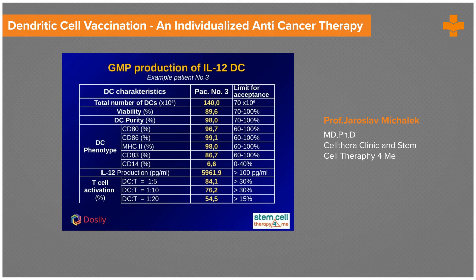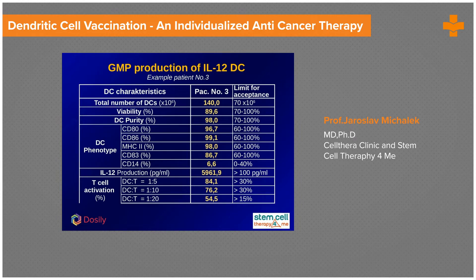Here is an example of GMP production of dendritic cells. We focus mostly on production of interleukin-12 as a strong marker of T cell activation. We evaluate the number and viability of dendritic cells, as well as their purity, checking for five markers as the DC phenotype. We also check for interleukin-12 production and, in a mixed lymphocyte reaction, check for T cell activation — including autologous T cell activation — which is very critical for the in vivo response of the patient.